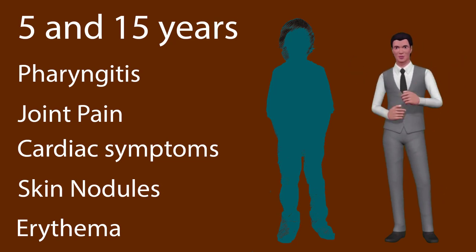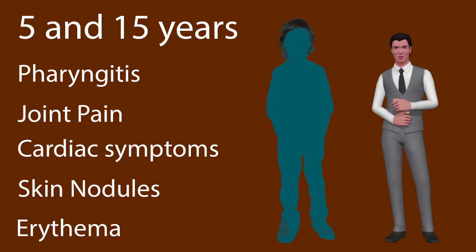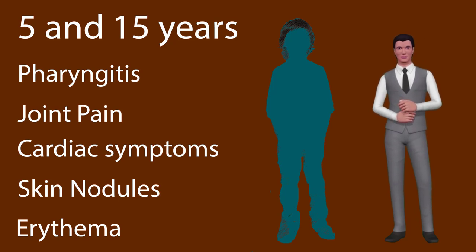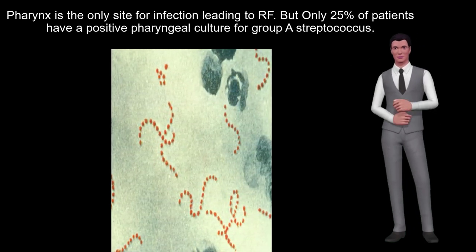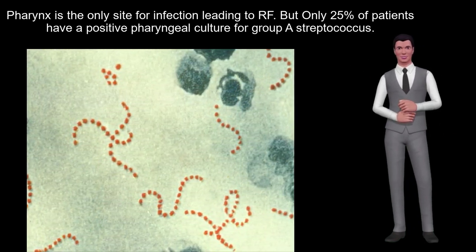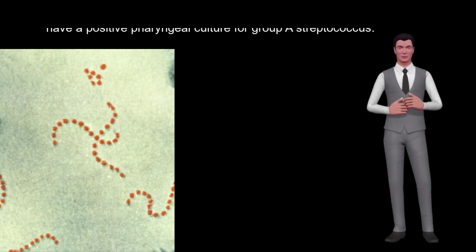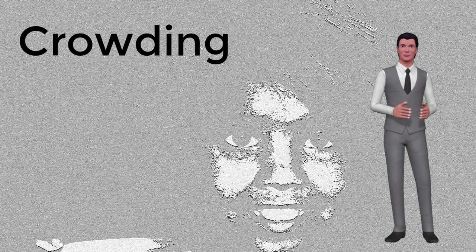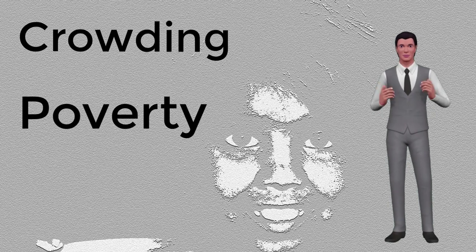The first attack of acute RF usually occurs in children between 5 and 15 years of age. It develops over 1 to 5 weeks, average 20 days, after a group A streptococcal (Streptococcus pyogenes) pharyngitis. The pharynx is the only site for infection leading to RF, but only 25% of patients have a positive pharyngeal culture for group A streptococcus with lab tests.